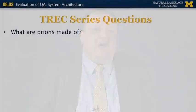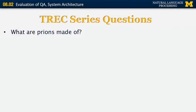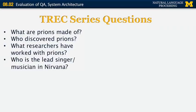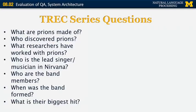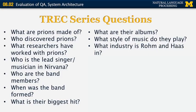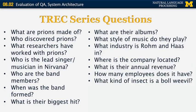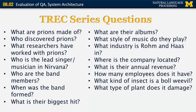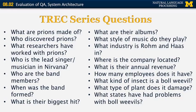Examples of series questions: the first series starts with 'What are prions made of?', followed by 'Who discovered prions?' and 'What researchers have worked with prions?' Another series: 'Who is the lead singer of Nirvana?', 'Who are the band members?', 'When was the band formed?', 'What is their biggest hit?', 'What are their albums?', 'What style of music do they play?' A third series covers a company called Roman: its industry, location, annual revenue, and number of employees. A fourth covers the boll weevil: what kind of insect it is, what plant it damages, and which states have had problems with it.